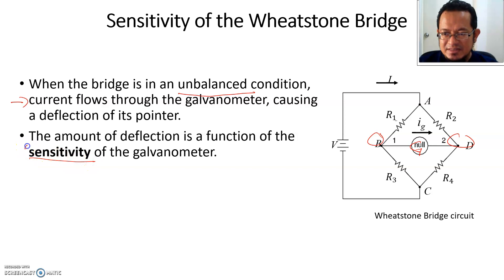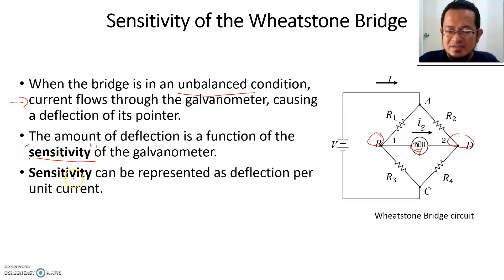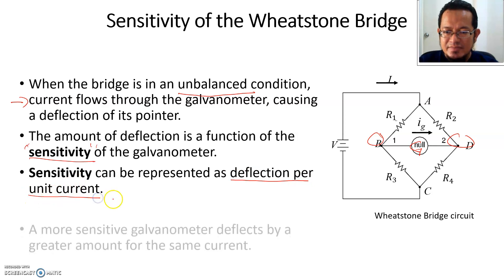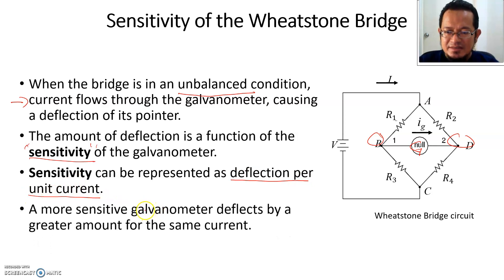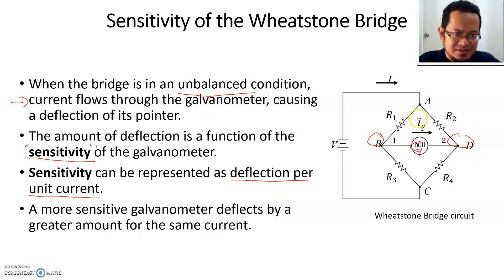We are going to talk about the sensitivity of the galvanometer. Sensitivity here can be presented as deflection per unit current. A more sensitive galvanometer deflects by a greater amount for the same current. If the galvanometer is very sensitive, then for a small current of IG, the galvanometer will deflect to a very large value.